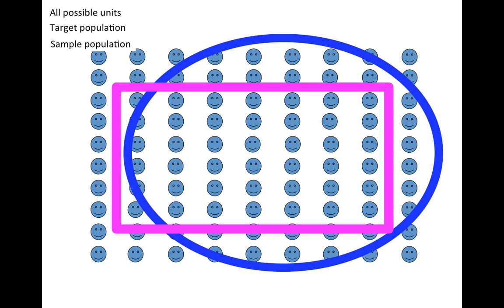Let's let this pink rectangle represent our sample population. The sample population is the set of units that have some chance of being included in our study.